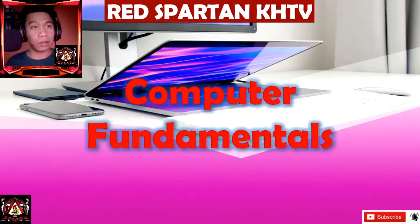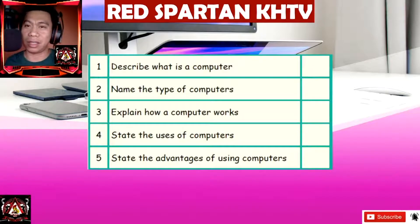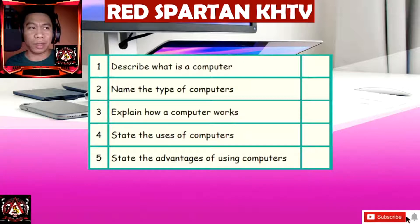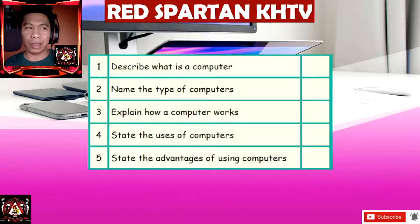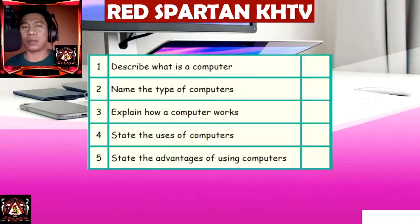These are our goals or objectives after we finish this lesson. The first objective is to be able to describe what a computer is. We also have: name the types of computers. Number 3 is explain how a computer works. Number 4, state the uses of computers. And number 5, state the advantages of computers.